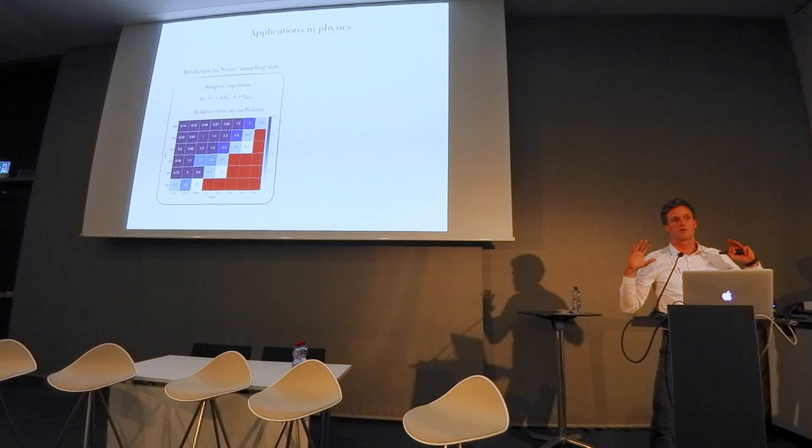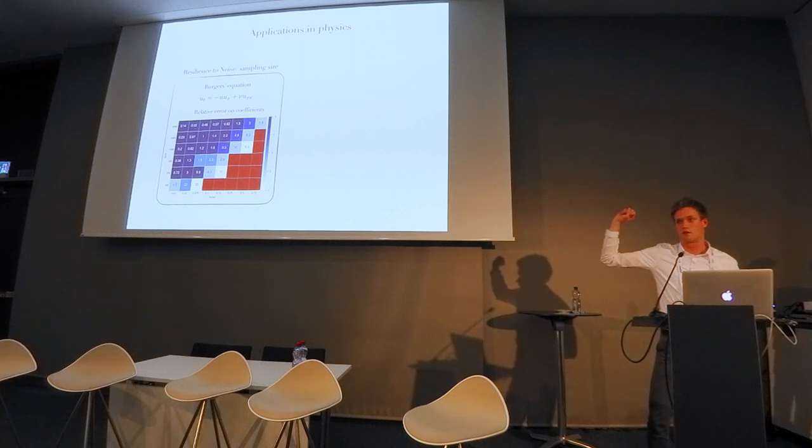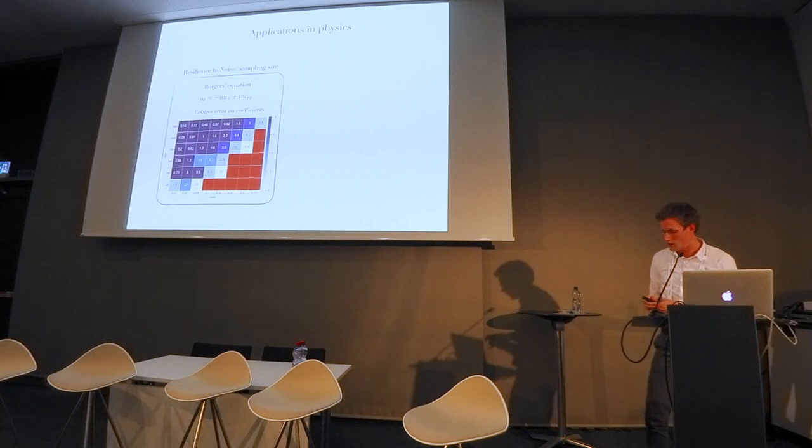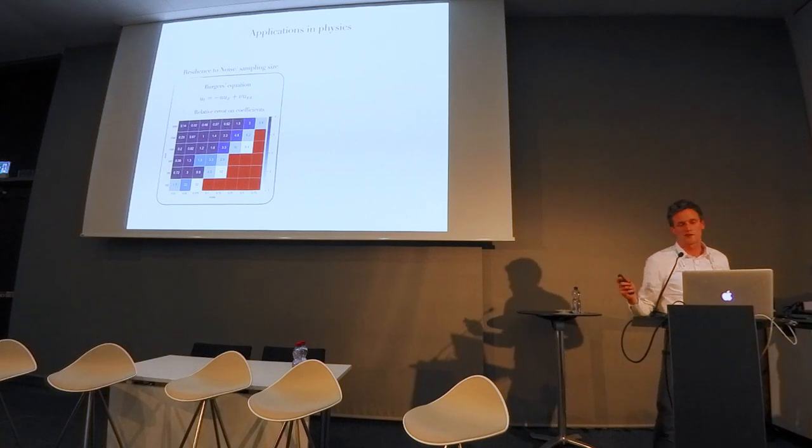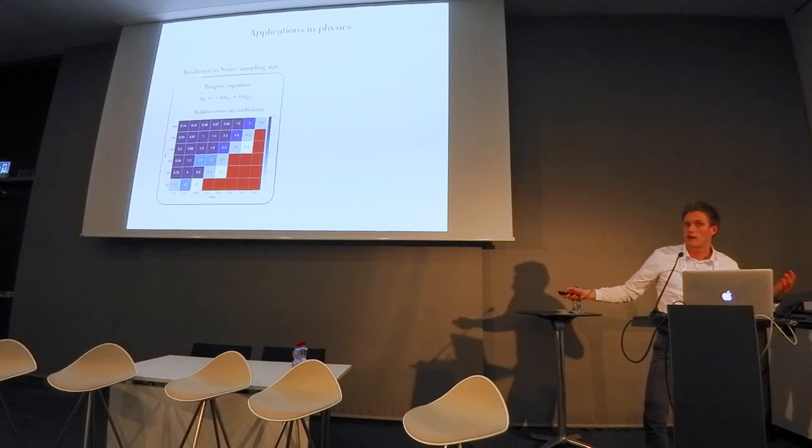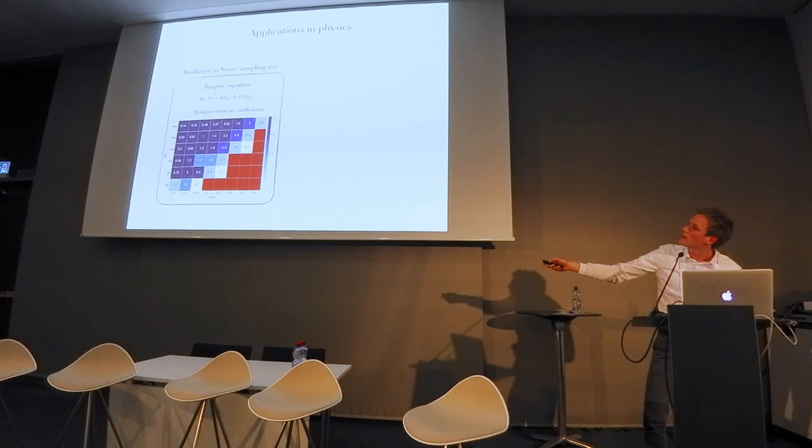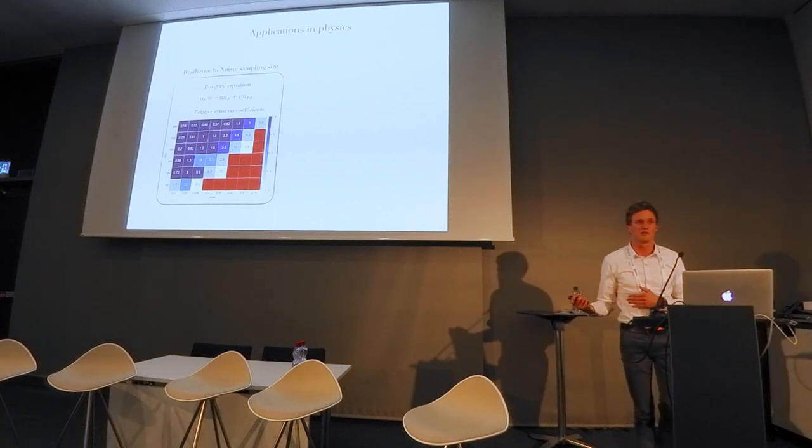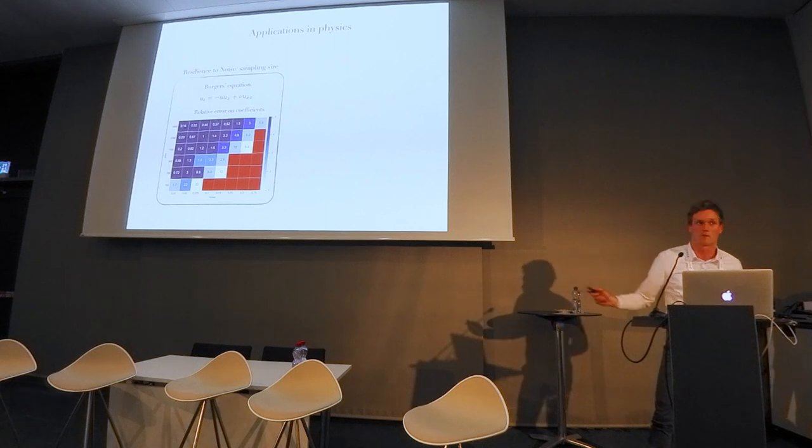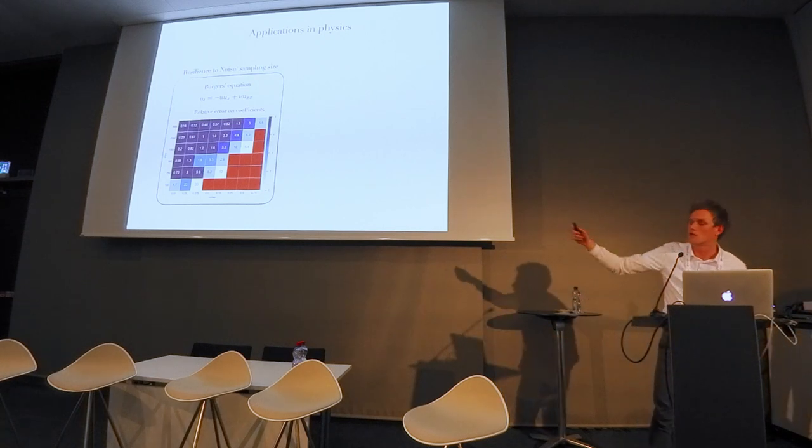To show you to what extent this works on some test cases that we ran it on, here's the Burgers equation. At the x-axis is the noise level, so this is white noise that we added to the numerical solution. This is all artificial data on which we added white noise. On the y-axis is the number of samples that we needed to find the right solution. If it's red, it didn't discover the underlying partial differential equation. If it's white or blue, it did recover the right equation, and the value is the percentage of error in the coefficients.